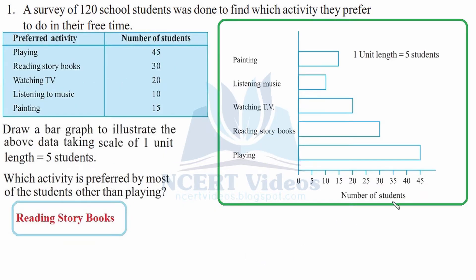This is how we will construct a bar graph. We will take one unit length equal to five. This is because when you look at the data, you can clearly see that the numbers are small. So one unit length equals five, then we have 10, and we have 15. The number of students is represented on the horizontal axis.